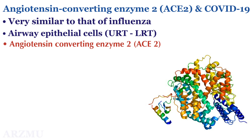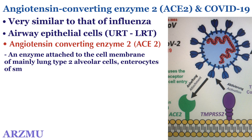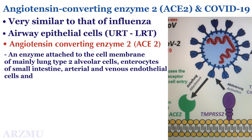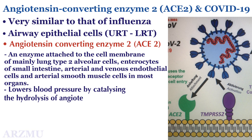The angiotensin converting enzyme 2 (ACE2) was found to be the receptor for SARS-CoV-2, which causes COVID-19. ACE2 is an enzyme attached to the cell membrane of mainly lung type 2 alveolar cells, enterocytes of the small intestine, arterial and venous endothelial cells, and arterial smooth muscle cells in most organs.